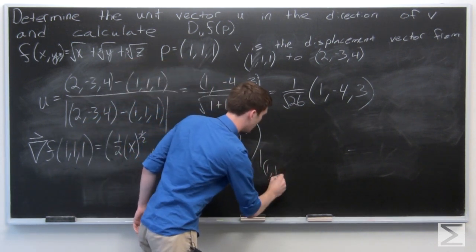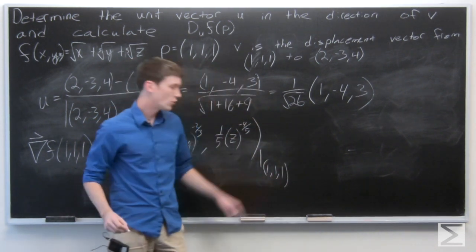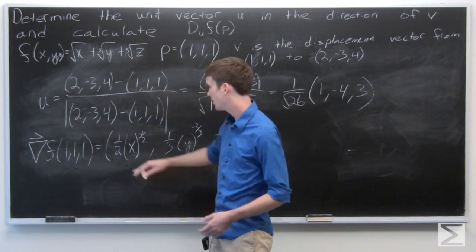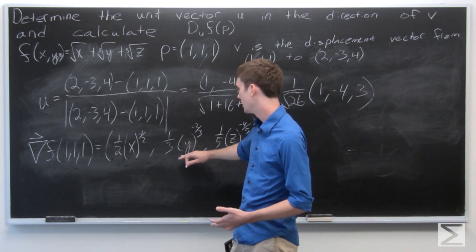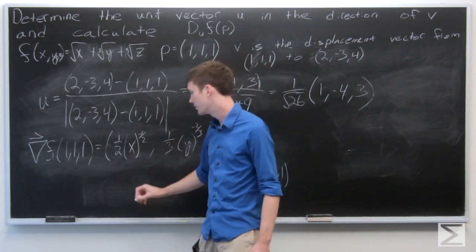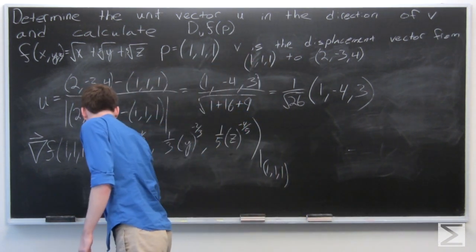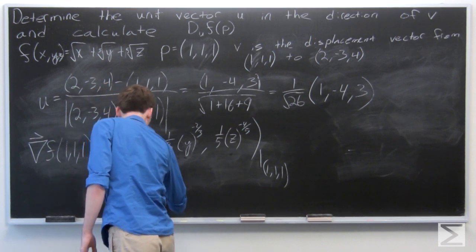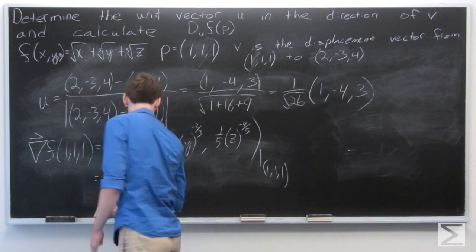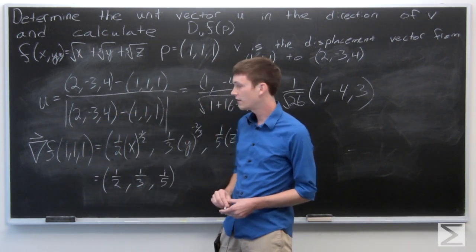And we want that at the point (1,1,1). So we can evaluate that. 1 raised to any power is 1, so we see that this gradient vector is just going to be ½, ⅓, ⅕.